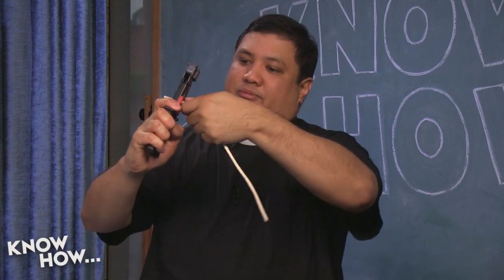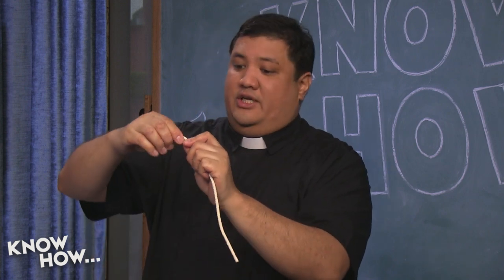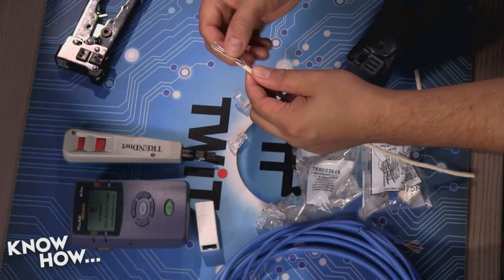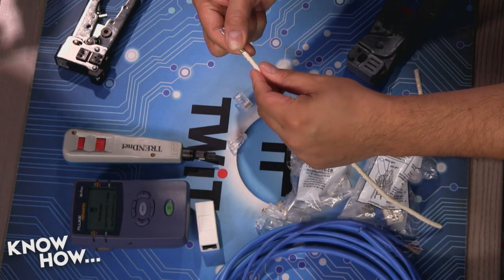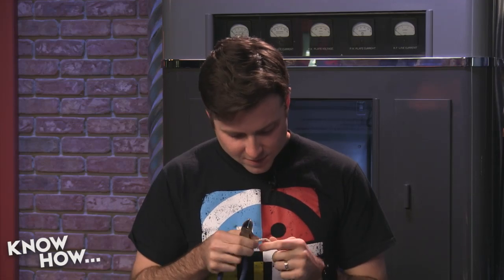Now we need to strip the insulation. You can use the dykes — go about an inch and a half down. Score it lightly; don't cut all the way through or you'll cut into the conductors. Then pull off the edge and you can see the nice colored strands. Check the overhead — make sure you didn't nick any of them; if you see copper exposed, you've cut too deep and need to start over.